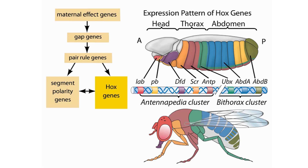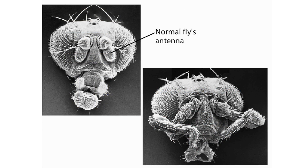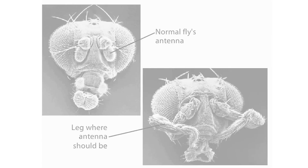How do we know that Hox genes determine segment identity? An important clue comes from bizarre mutations observed in Drosophila. One mutation caused the misexpression of an Antennapedia gene. Normally, the gene is expressed in the thoracic segment where legs later develop. In the mutant, the gene is misexpressed in the head, and this misexpression causes part of the head to take on thoracic identity, with legs developing in place of the antennae in the head of the Drosophila.